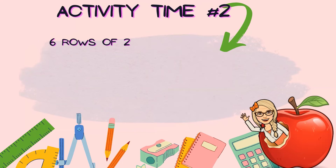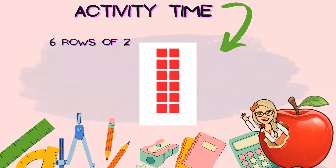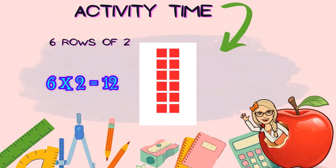Activity number two: six rows of two. Here we have six rows — one, two, three, four, five, six — of two. What's the multiplication sentence? Six times two equals 12. Using multiplication, we knew that it was 12!